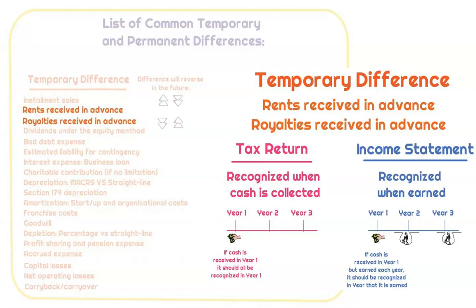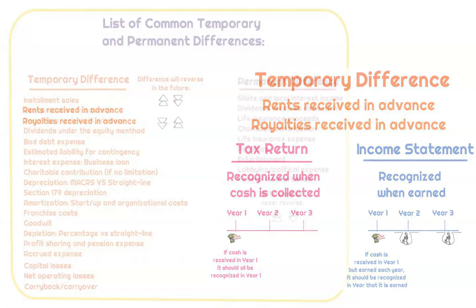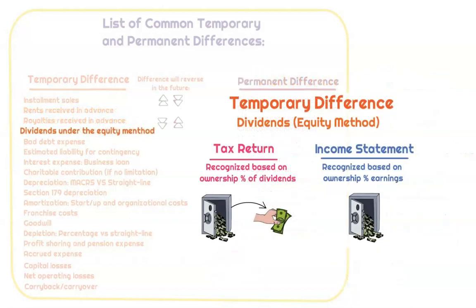Rents received in advance and royalties received in advance — that's why these would be recognized as a temporary difference. Dividends under the equity method: under US GAAP this is going to be considered income in the subsidiary's earnings, whereas on the tax return this is going to be income recognized in its entirety when the dividend has been received.